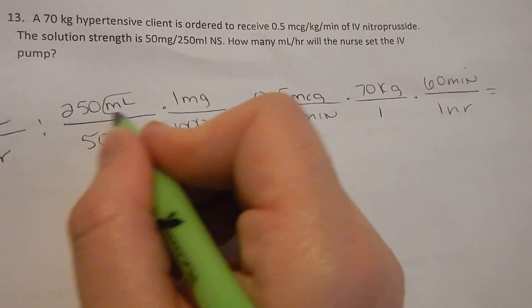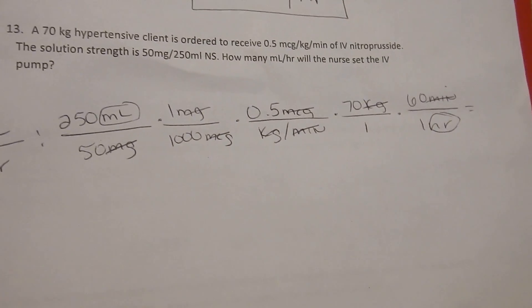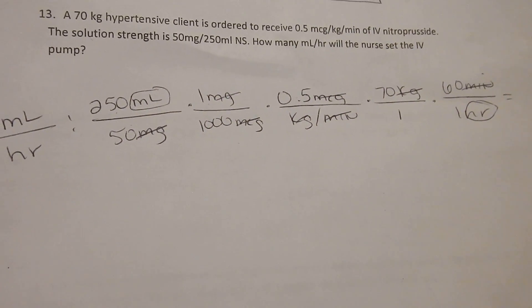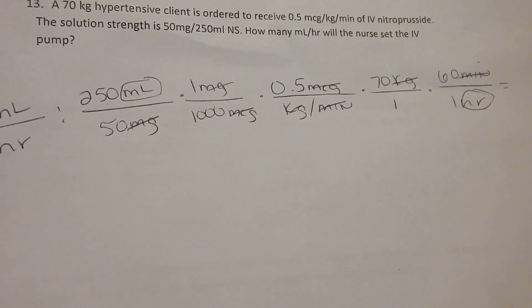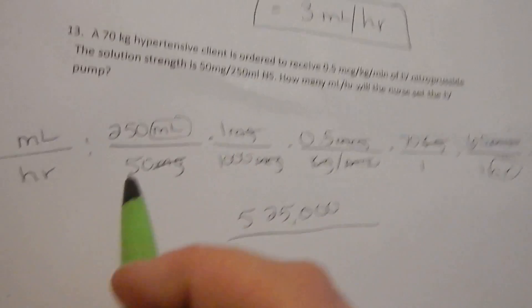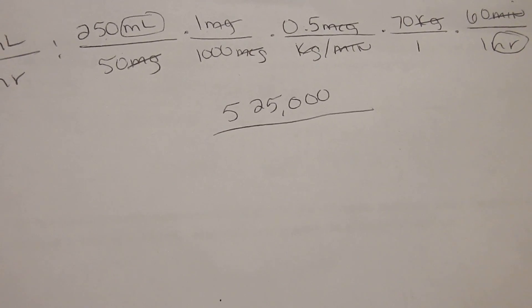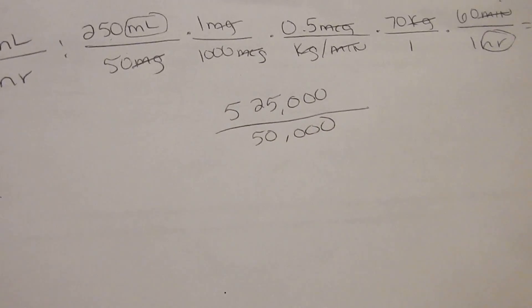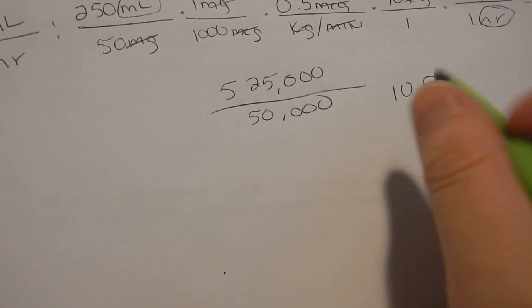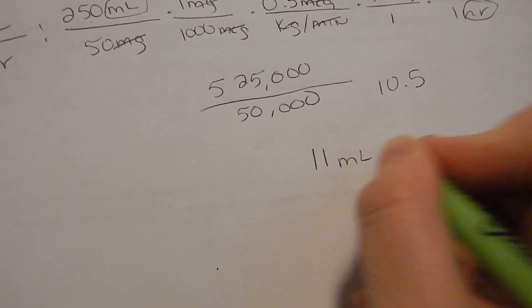Go ahead and mark the stuff off. We have the mLs, milligrams, micrograms, kilograms, and minutes — that leaves us with exactly what we need. So now multiply: 250 times 1 times 0.5 times 70 times 60 on top; and 50 times 1,000 times 1 times 1, which is 50,000, on the bottom. Divide it out and we have 10.5. But we can't really have 10.5 mL per hour, so we round that up to 11 mL per hour.